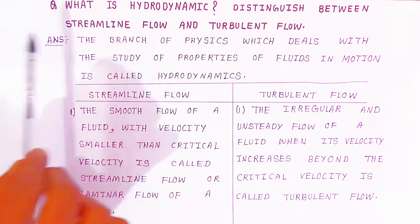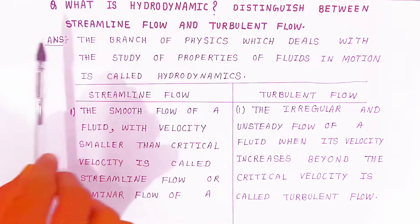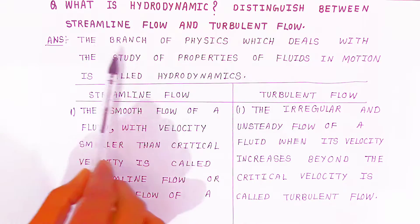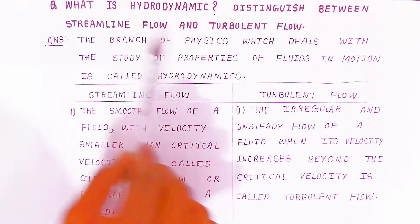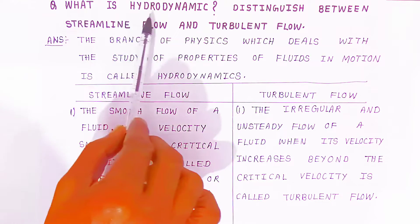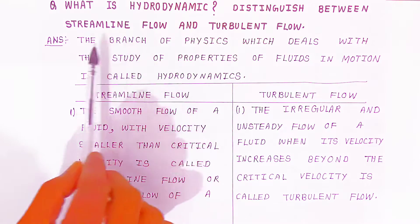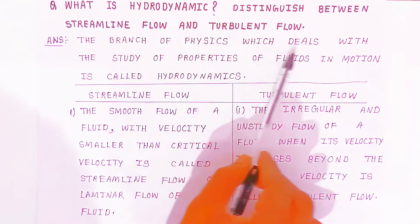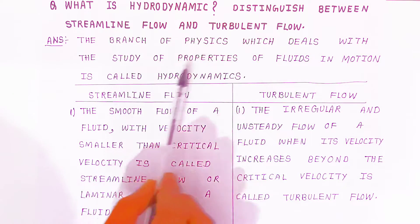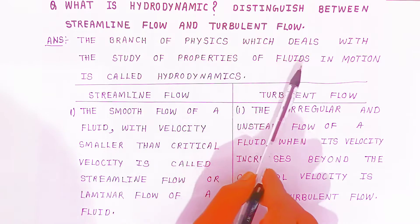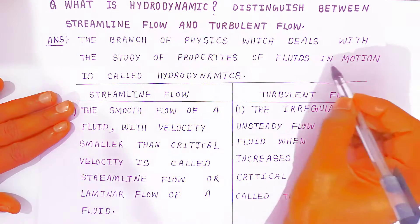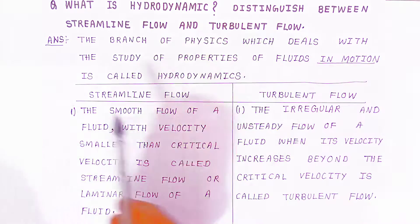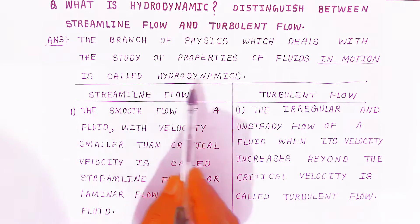When water is in flow, the flow is of two types: streamline flow and turbulent flow. Now we are going to write the definition. The branch of physics which deals with the study of properties of fluid, but in motion — here the motion word is very important — is called as hydrodynamics.